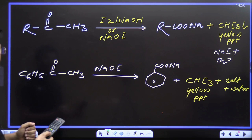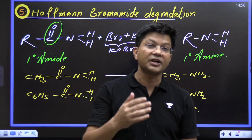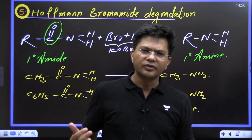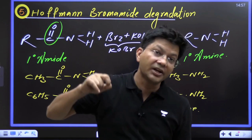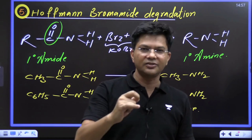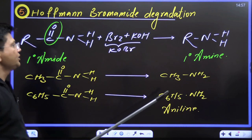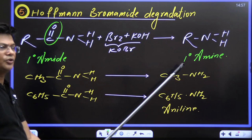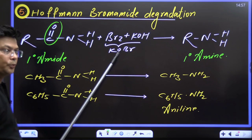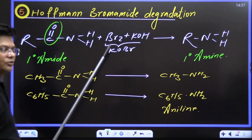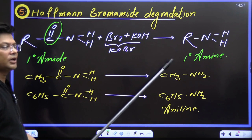The last but not the least reaction is Hoffmann Bromamide degradation — also called Hoffmann Bromide rearrangement or Hoffmann Bromamide degradation. In this reaction there is a shortening of chain by one carbon. A primary amide (R-CO-NH₂) gets converted into a primary amine (R-NH₂); the CO group — one carbon — is lost in the presence of Br₂/KOH. KOBr is potassium hypobromite. Whether it is given as Br₂/KOH or potassium hypobromite (KOBr), the same reaction takes place.